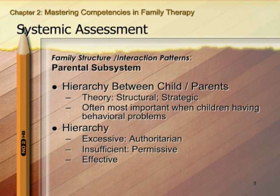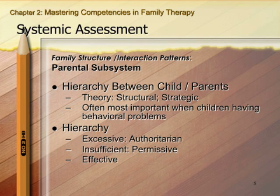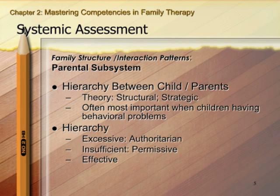An excessive hierarchy is when the parent uses a more authoritarian approach — too rigid, too many rules around too many issues — and there isn't enough freedom for the child to develop their sense of individuality and independence. On the opposite end, an insufficient hierarchy is where the parent is far too permissive: not enough rules, structures, consistency, or consequences, and the child has too much freedom and isn't learning social and behavioral norms.